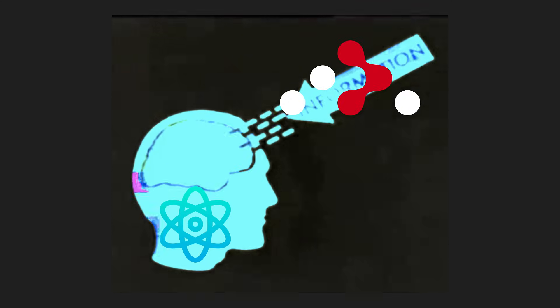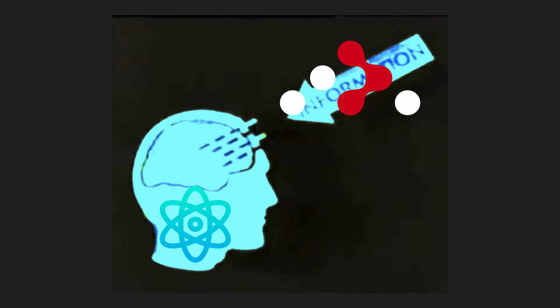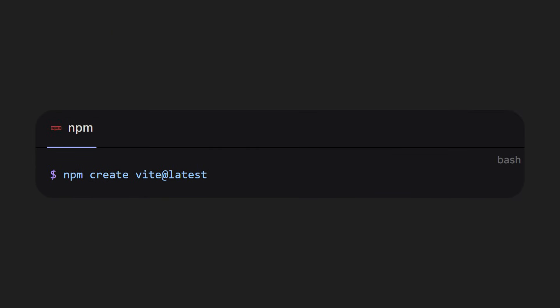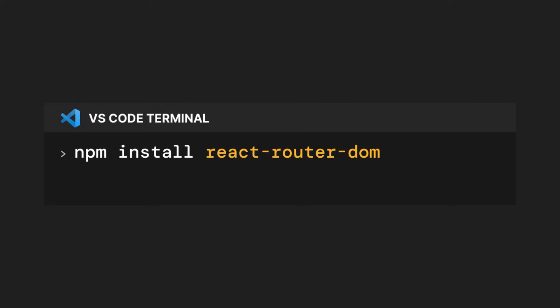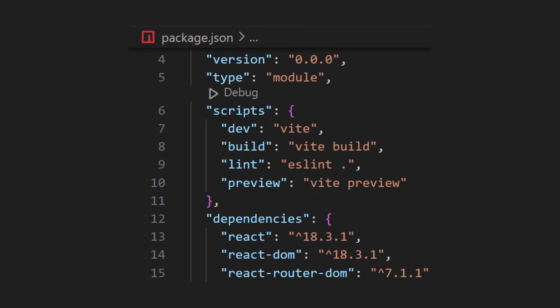To start learning how to use React Router in your React app, let's first create a React app using Vite. Then let's go into our terminal and type npm install react-router-dom. This will install React Router in our project. You can go to the package.json file to ensure that your React Router is updated to the latest version.